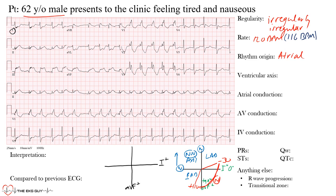Looking at lead aVF, we can clearly see the complexes are above baseline — mainly the initial portion — so positive complexes going toward the positive end of lead aVF places us in the right-inferior quadrant. Because lead I is roughly isoelectric and aVF is positive, the axis lies somewhere in the right-normal range.